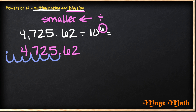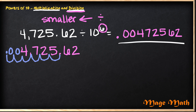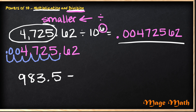Let's rewrite the number. Remember, in those empty loops, replace them with zeros. So our new number is 0.00472562. Wow, that's a really big decimal, but don't let that big number intimidate you. This number is still smaller than our original number, which included a whole number.